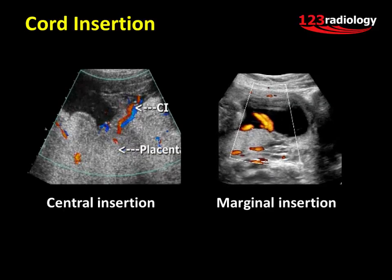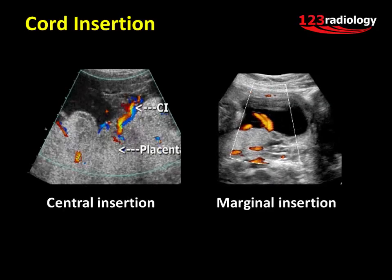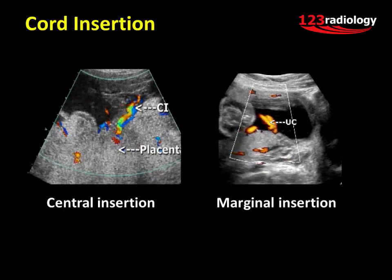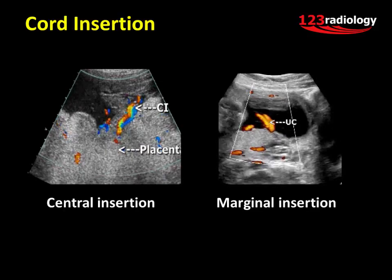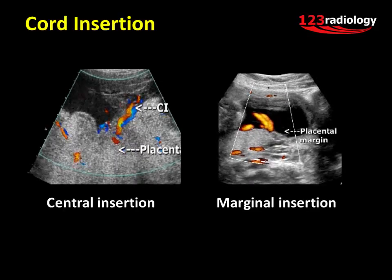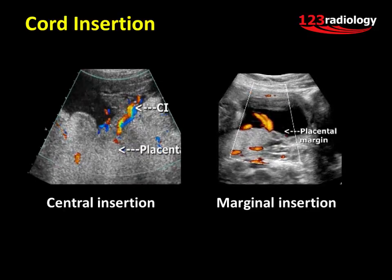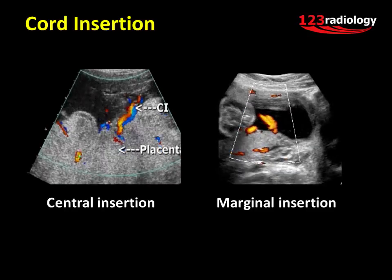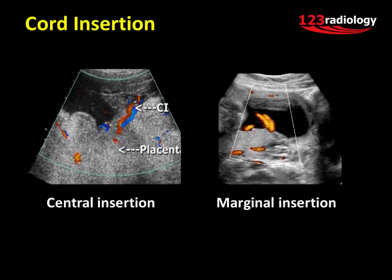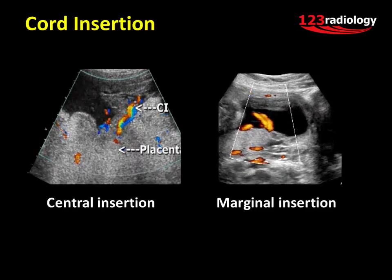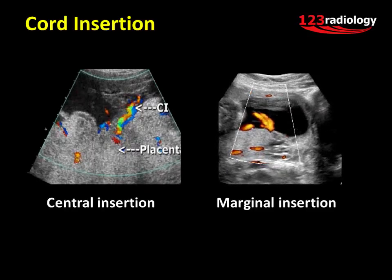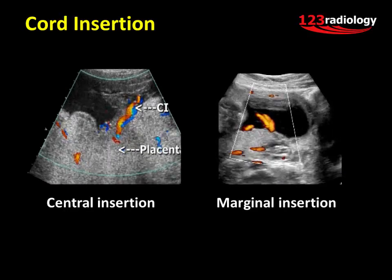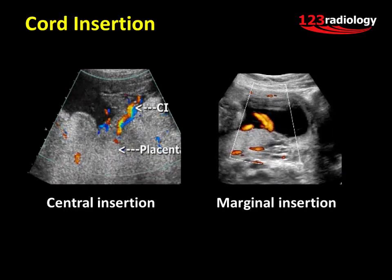The umbilical cord inserts into the center of the placenta and into the fetus at the umbilicus. Variations in insertion can occur; for example, marginal insertion and velamentous insertion may be seen.